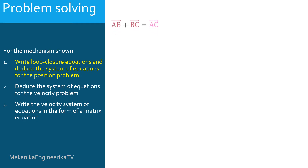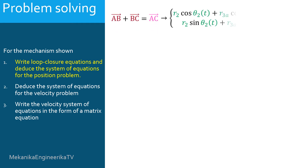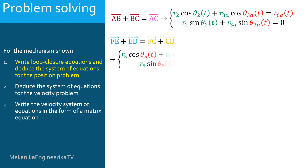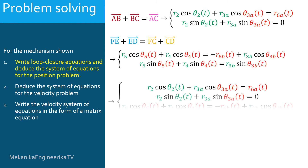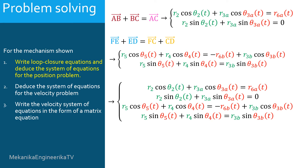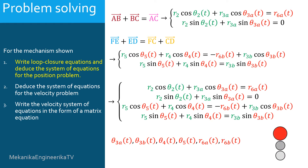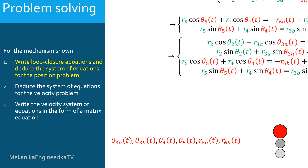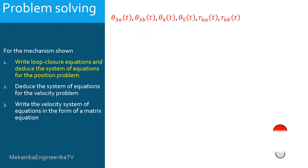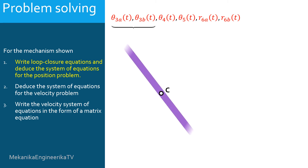Using the first loop vector equation, we established two scalar algebraic equations, and using the second loop vector equation, we established two more — in all, four scalar equations. However, these equations involve six unknowns, two more than what can be solved. To avoid this blockage, we need to recall that theta 3A and theta 3B are both related to link 3, so they are not independent. Also, R6A and R6B are both related to link 6, so they are not independent.